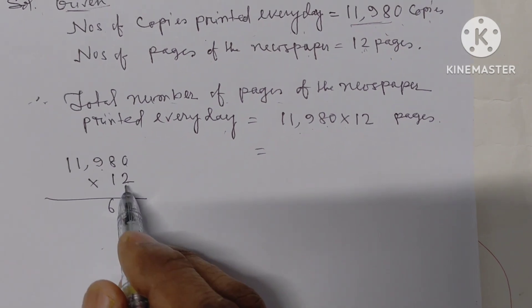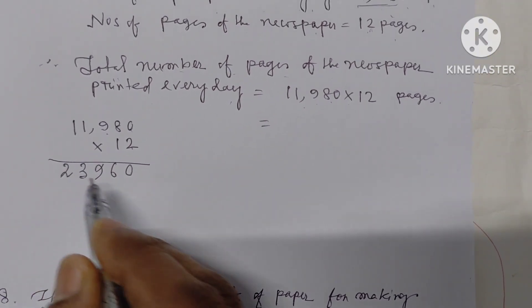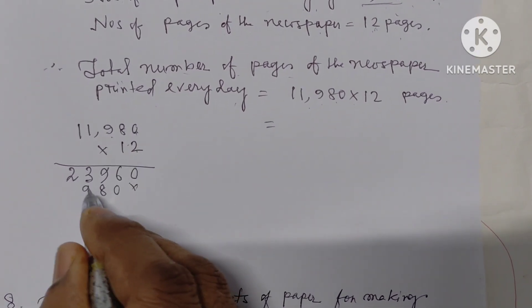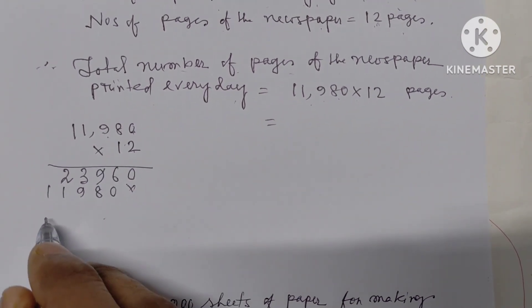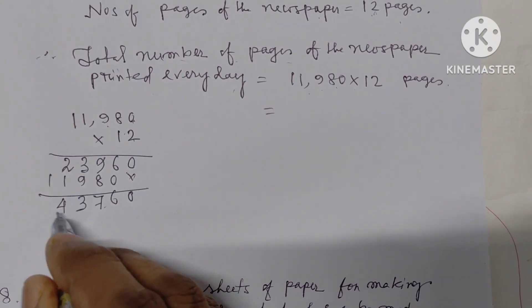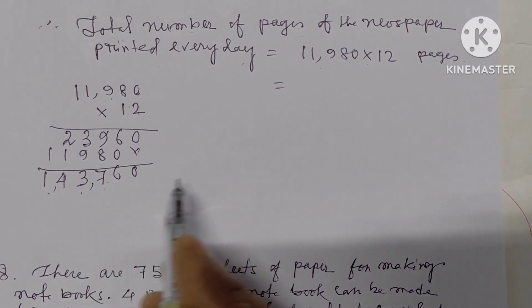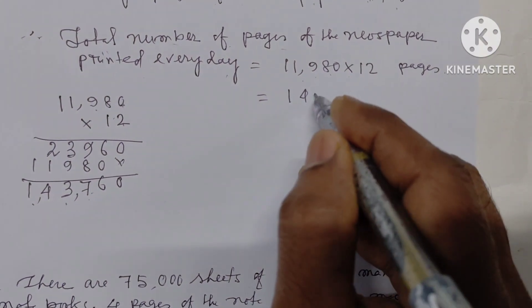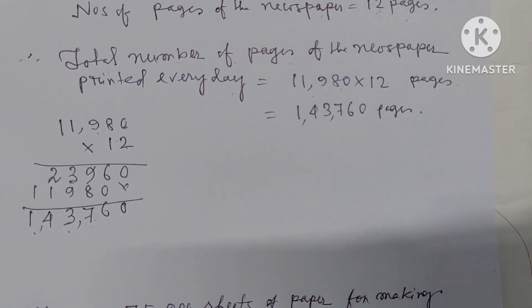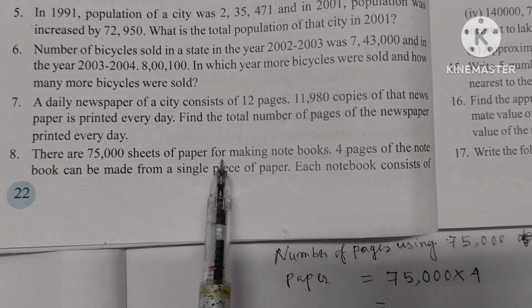Computing 11,980 into 12: the result is 1,43,760 pages. The total number of pages of the newspaper printed every day is 1,43,760.